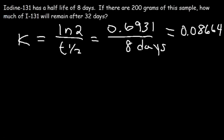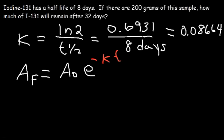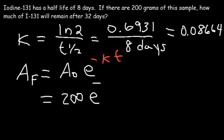Once we have the rate constant K, we can find the final amount using this equation: AF represents the final amount, A-initial (A₀) is the initial amount, and then it's e raised to the negative KT. The negative means we're dealing with a decay problem — the amount of iodine remaining is decreasing over time. The initial amount is 200, K is 0.08664, and T is 32 days.